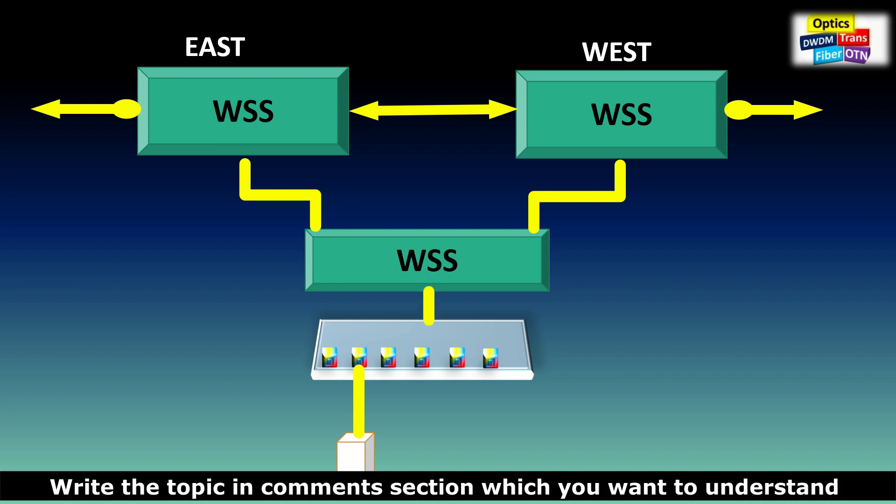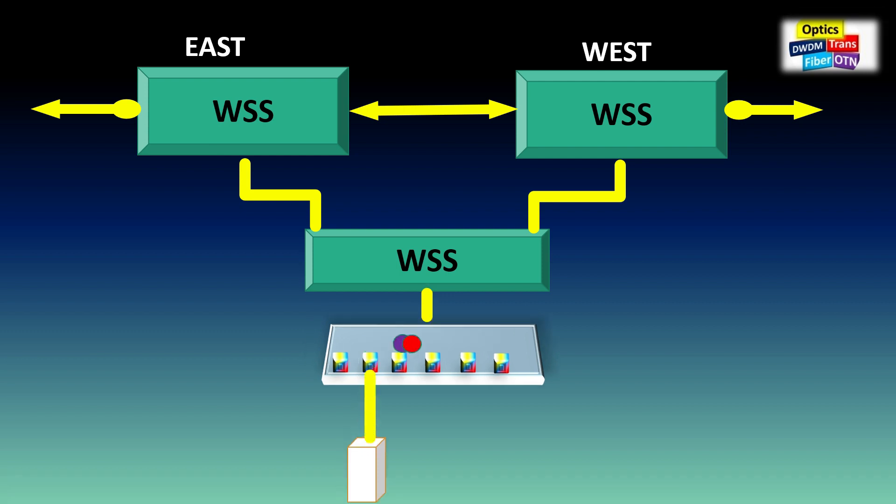Now signal from the transponder can go via this new WSS, and based on the connection, it will go in a specific direction. It can be sent to east or west.